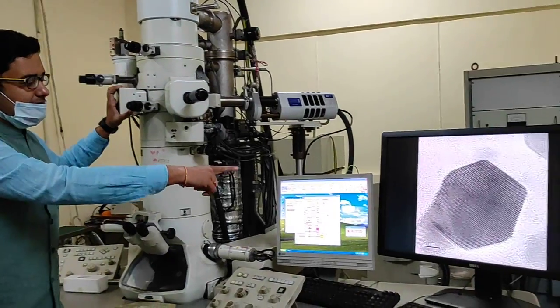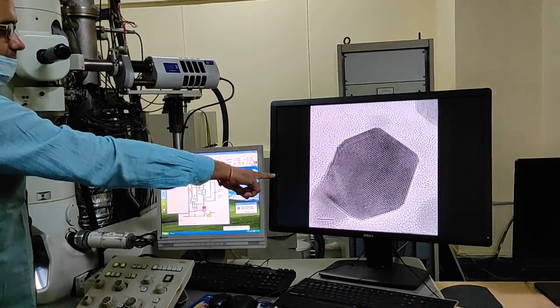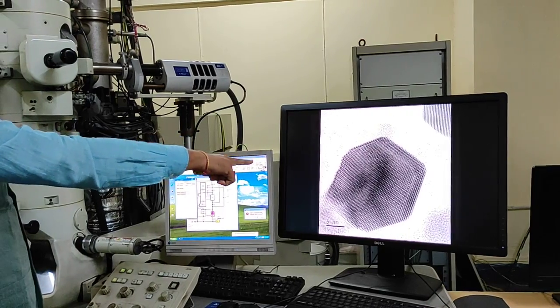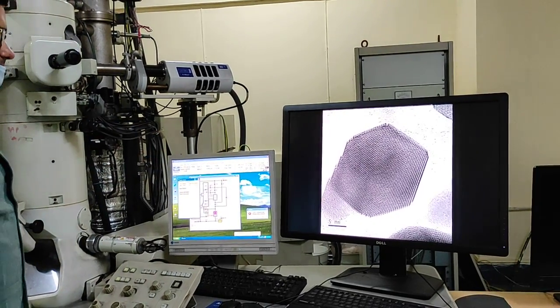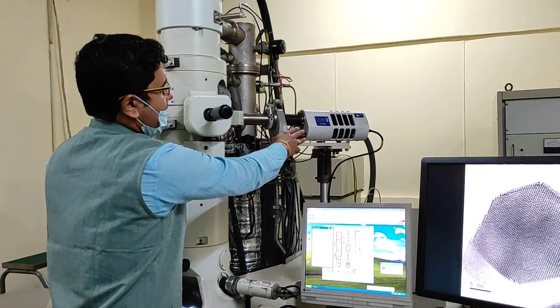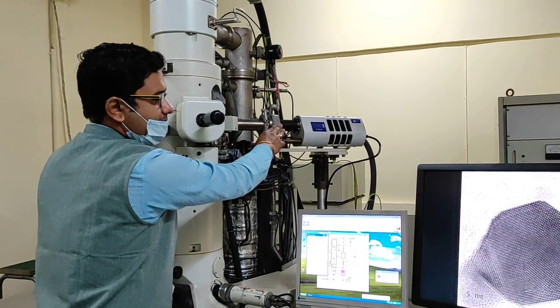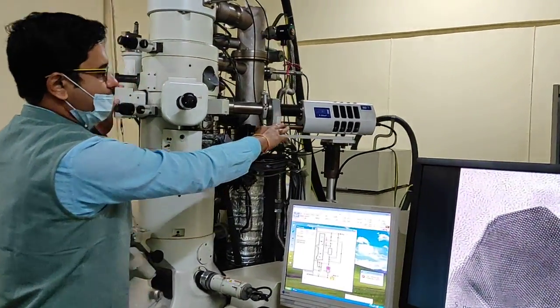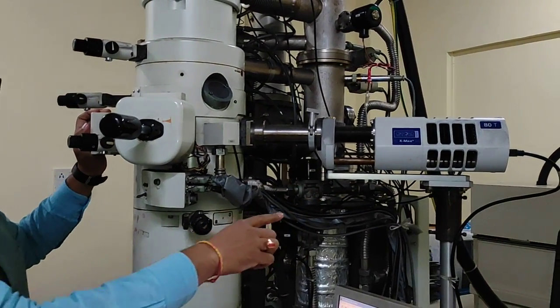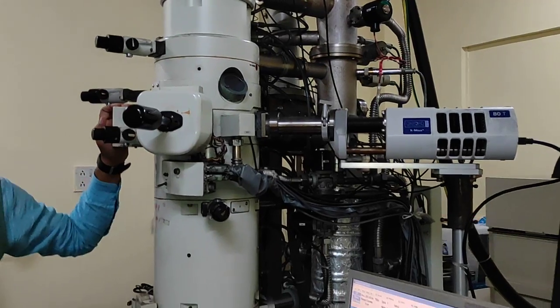These are the images you can see after the electron beam incidents on the sample. It is created with the help of the CCD camera. Other than this, we have the EDS detector. With the help of this EDS detector, we can do elemental analysis of samples, both qualitatively and quantitatively.